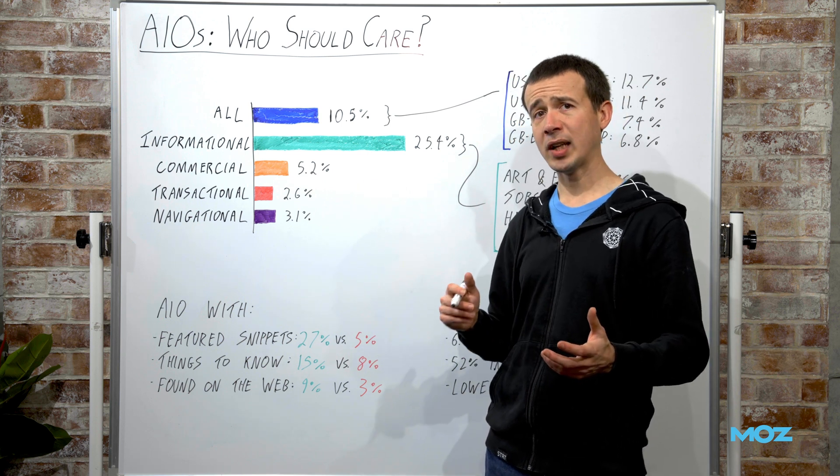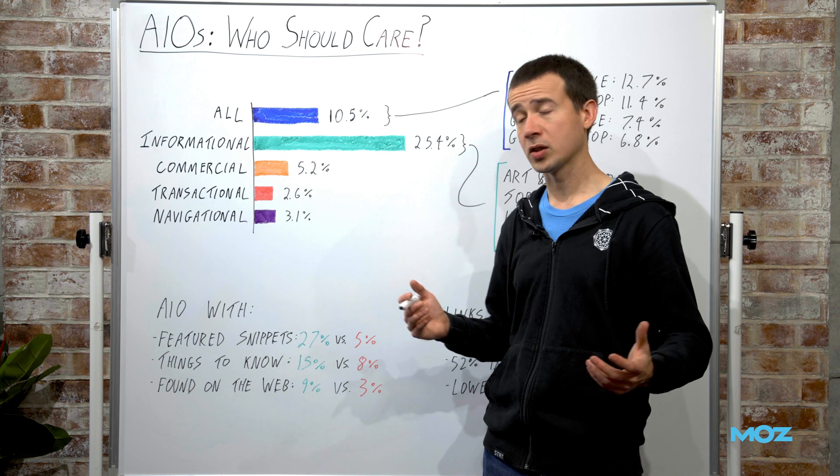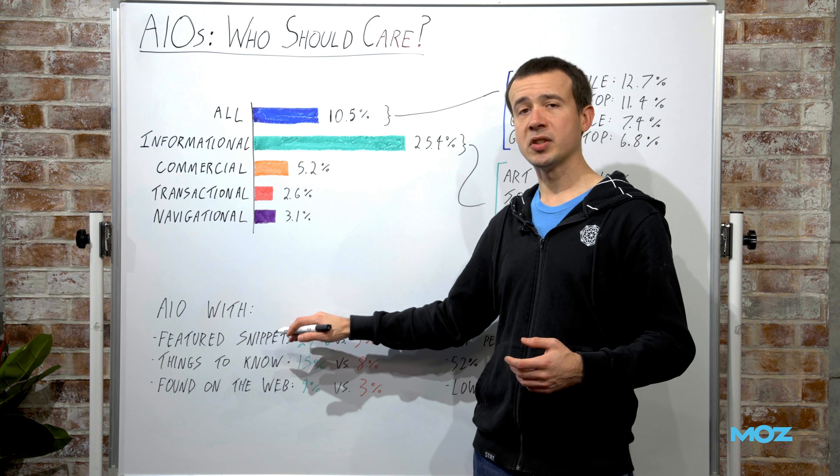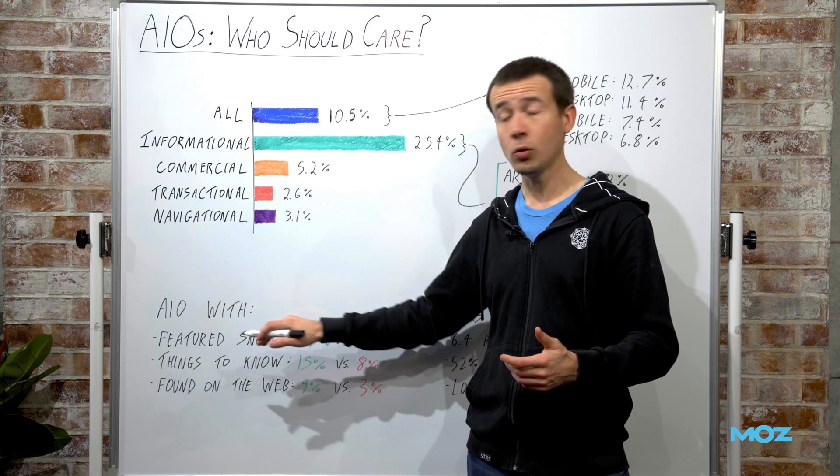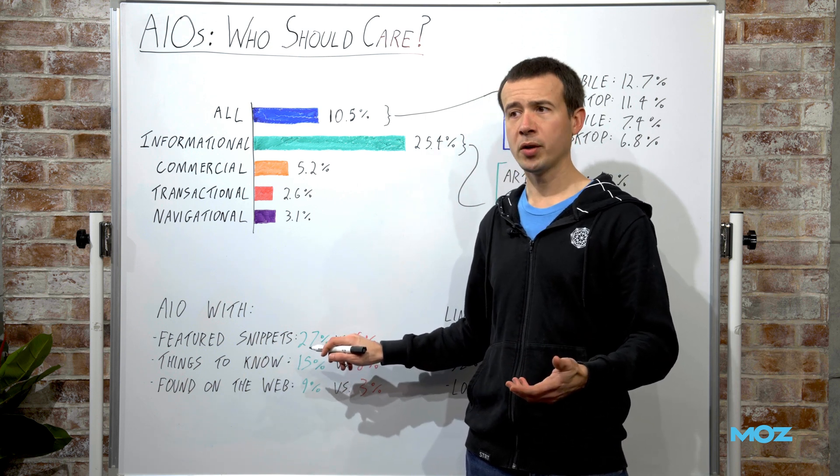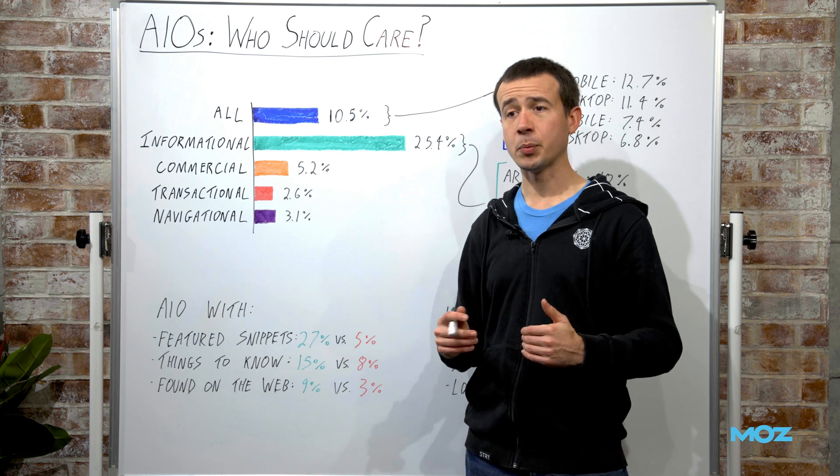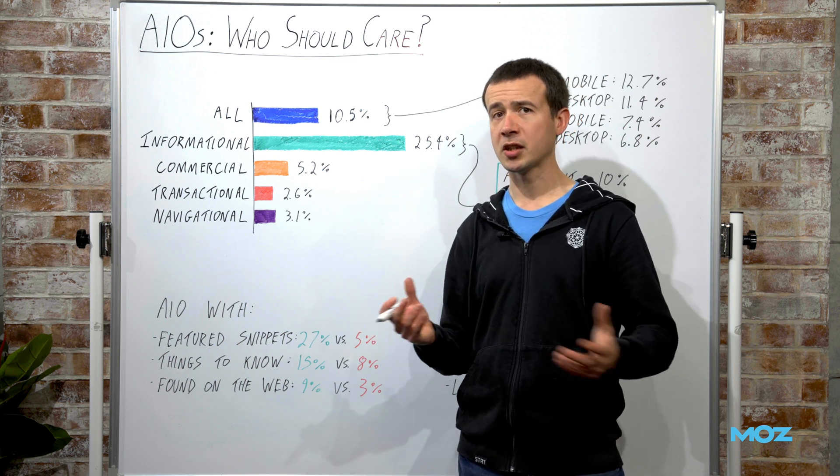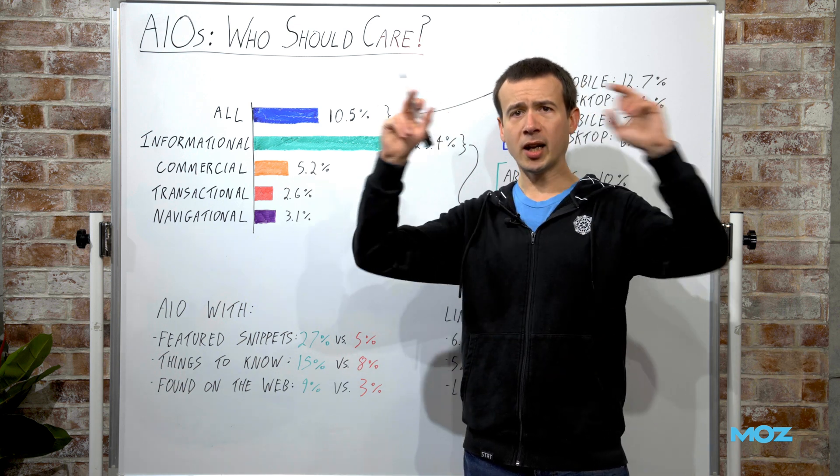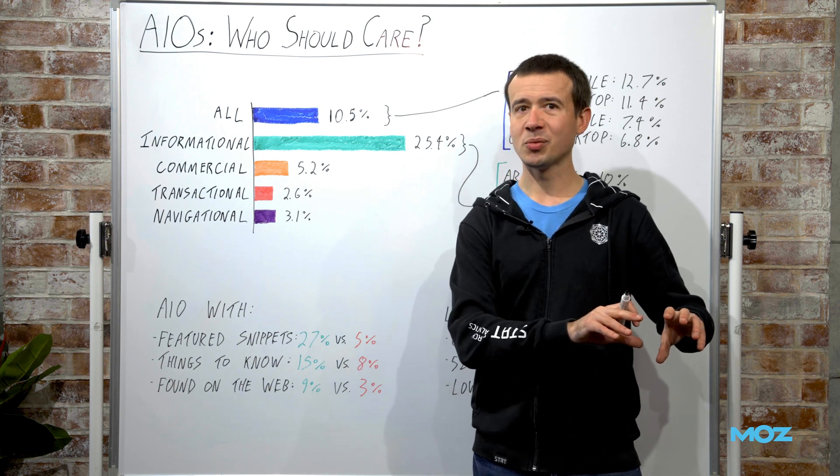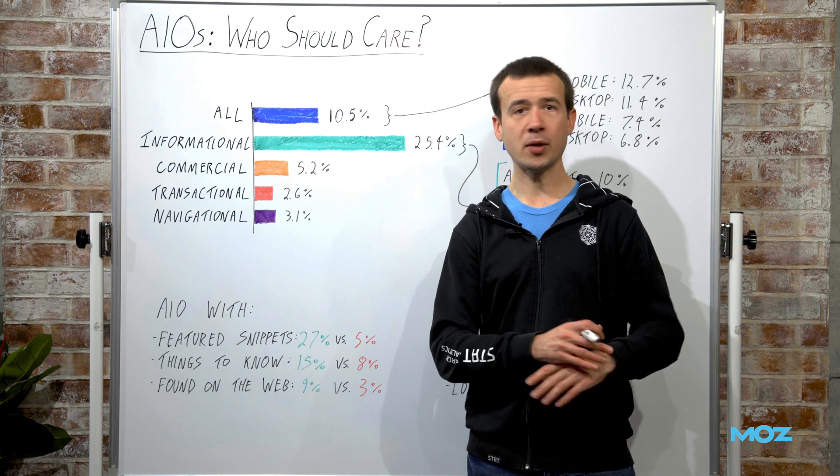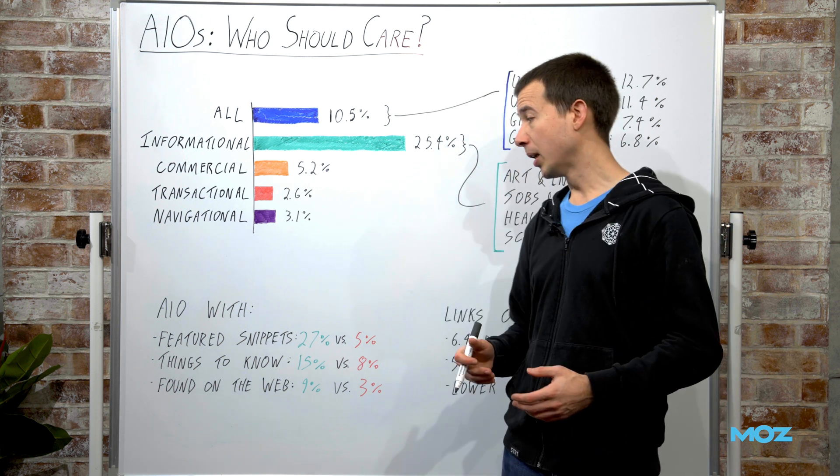That is also reflected in the kind of features that we see these appearing alongside. For example, about 27% of SERPs that have an AI overview also have a featured snippet. That's more than one in four SERPs. To my mind, they're doing something very similar. In the long term, I'd expect these to be consolidated into one feature. But for now, that results in a search result where you have the AI overview, then a featured snippet with the same or sometimes slightly contradictory information. That's a huge amount of space that's gone already.